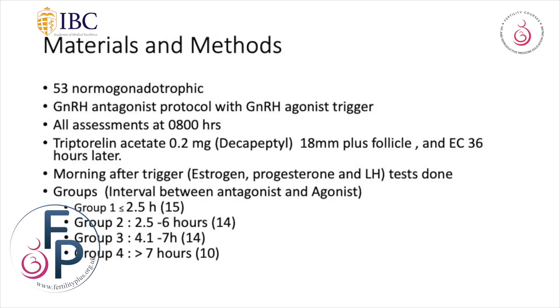Looking at the materials: 53 normal gonadotrophic women on a GnRH antagonist protocol with GnRH agonist trigger, all assessments at 8:00 hours. Decapeptyl 0.2 was given when the leading follicles were 18 millimetres, and egg collection was done 36 hours later. The morning after trigger, estrogen, progesterone, and LH tests were done. The intervals between antagonist and agonist were grouped as: Group 1 less than 2.5 hours, Group 2 2.5 to 4 hours, Group 3 4.1 to 7 hours, and Group 4 more than 7 hours.